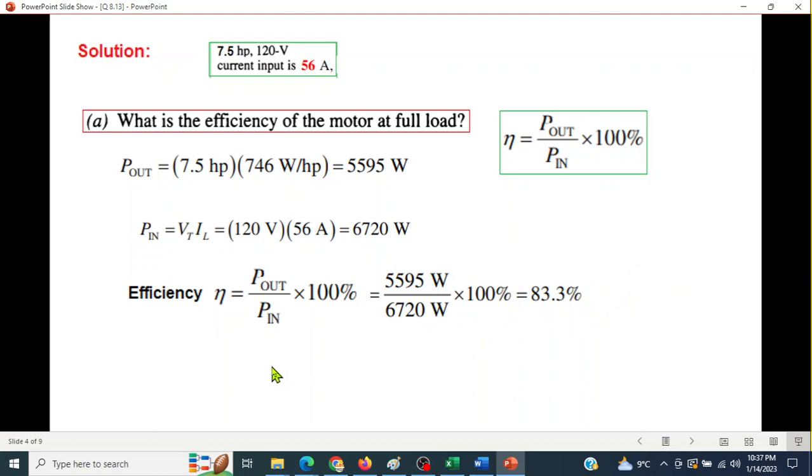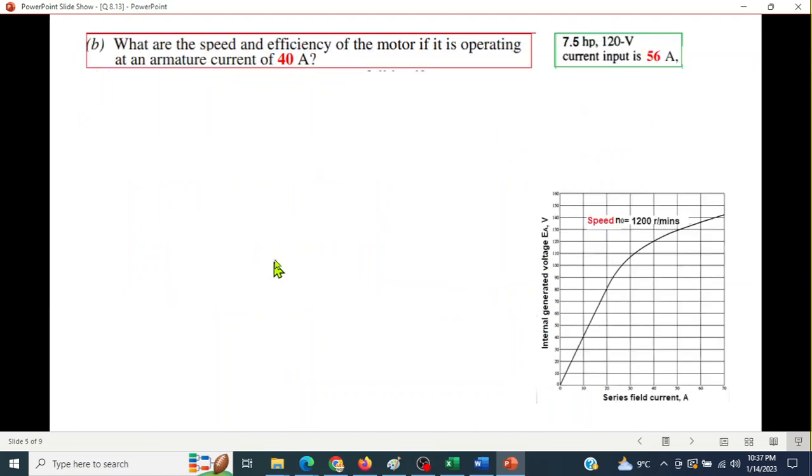Now part b is slightly difficult. Part b has two portions: What are the speed and efficiency of this motor if it is operating at an armature current of 40 ampere? So instead of 56, now it is operating at 40 ampere, and for this we'll have to calculate the speed and also the efficiency.